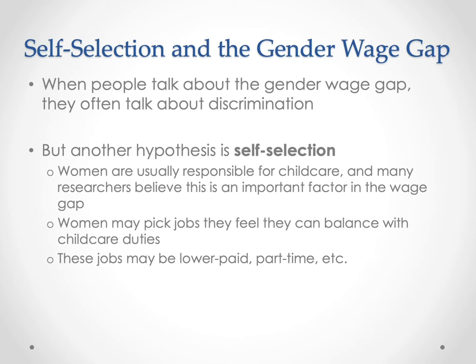Kids also have long holiday breaks — summer holidays and other holidays throughout the year — that are typically longer than parents have the capacity to take time off from work. So mothers, if they're responsible for child care, may be more likely to take part-time jobs they can quit during the summer when it's time to take care of children who are no longer in school. It's curious to call this self-selection, because in some ways it's clearly a consequence of the organization of society where women are being asked to do more child care than men, and that is producing this labor market outcome.